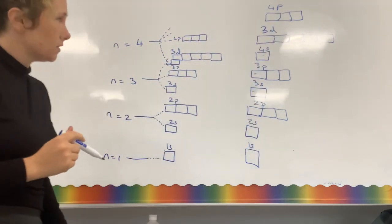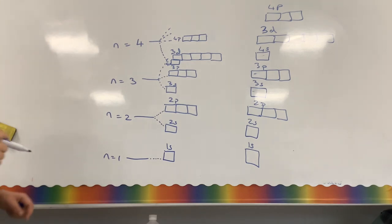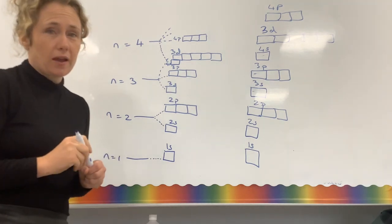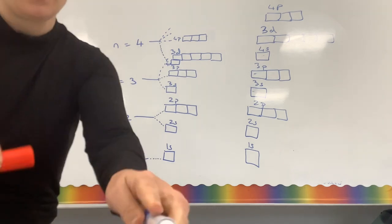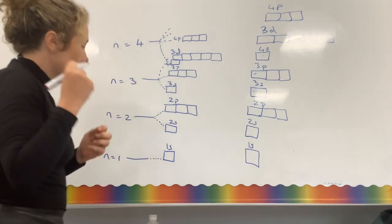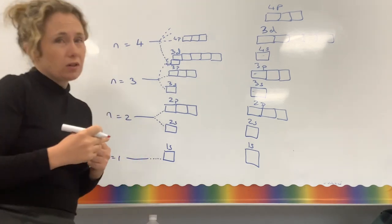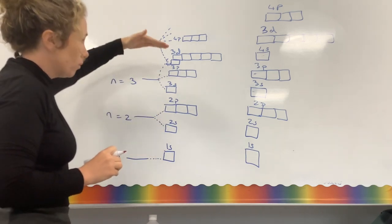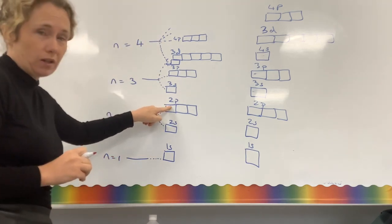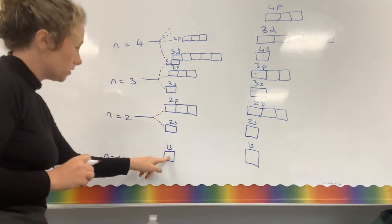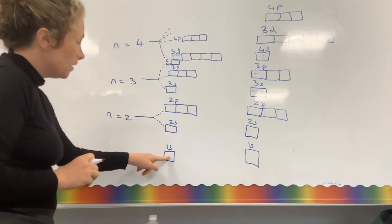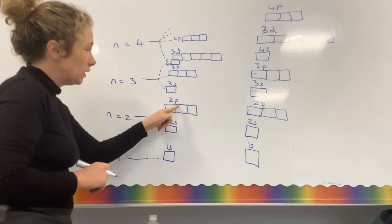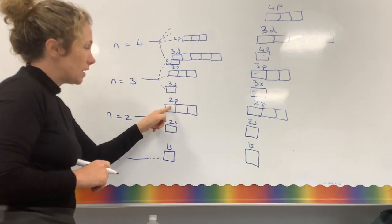Now we have our rules for where electrons go. There are three rules to remember. You always have to start in your lower energy levels and move up — you can't start at 2p, for example, you always have to start at the lowest one. Then, if you have more than one orbital of equal energy, those electrons want to be in those orbitals separately.